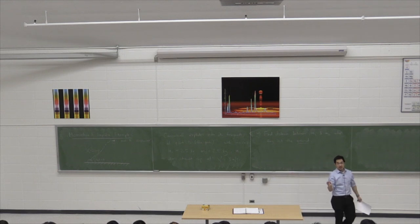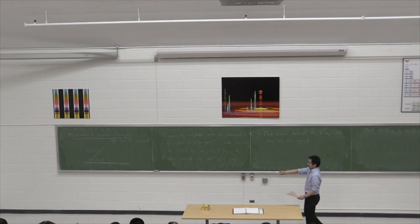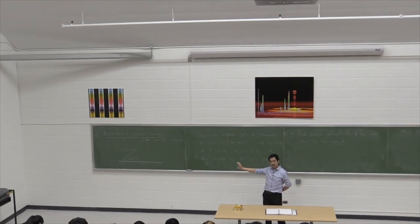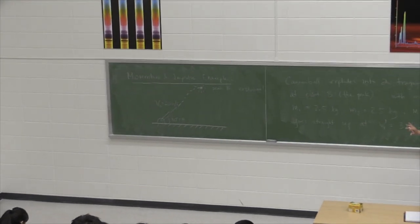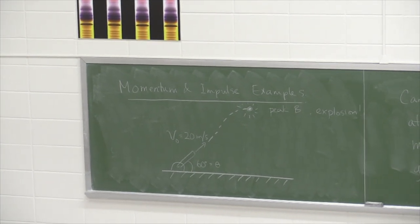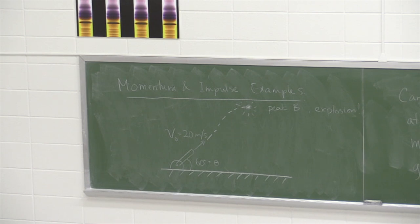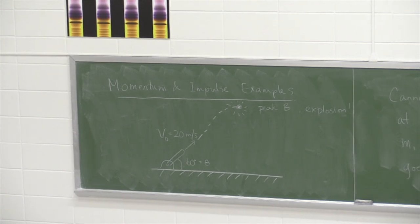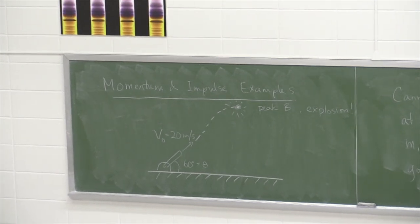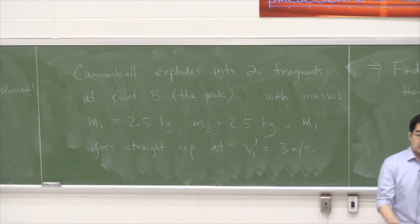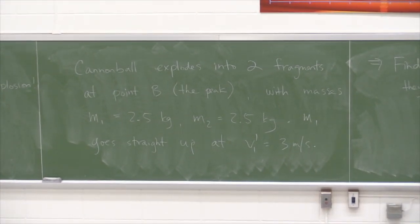I'll start with the first example: an explosion example. We have a cannonball being shot out of a cannon at an angle theta equal to 60 degrees with the ground. The cannonball is shot at an initial velocity v-naught equal to 20 meters per second. It undergoes projectile motion, reaching the peak of its parabolic path at point B, where it explodes and breaks into two fragments, each with a mass of 2.5 kilograms — so the initial cannonball was 5 kilograms total.